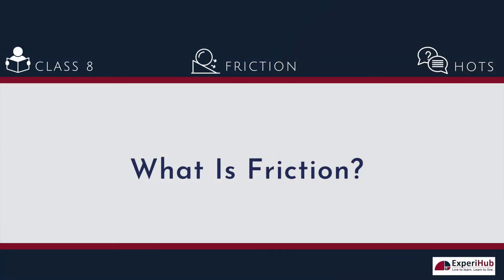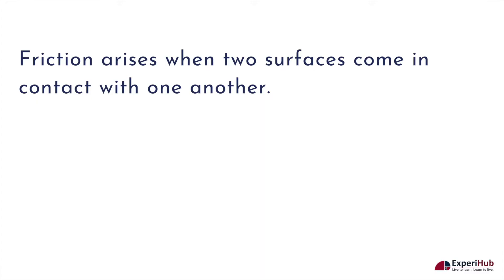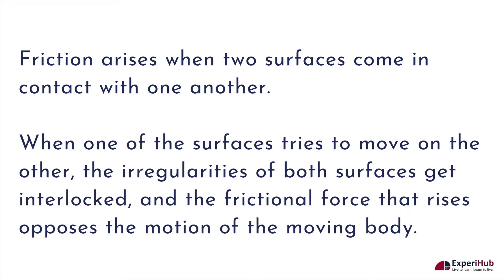What is friction? Friction arises when two surfaces come in contact with one another. When one of the surfaces tries to move on the other, the irregularities of both surfaces get interlocked, and the frictional force that arises opposes the motion of the moving body.